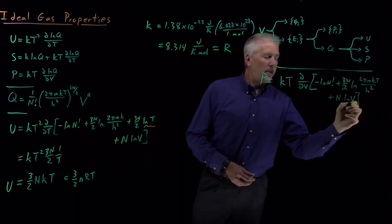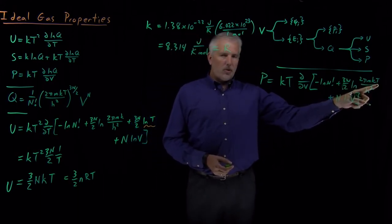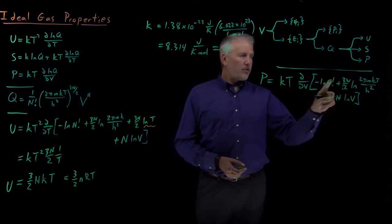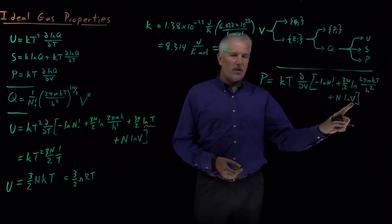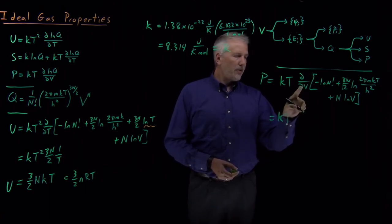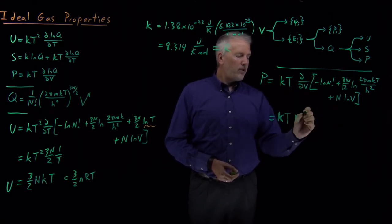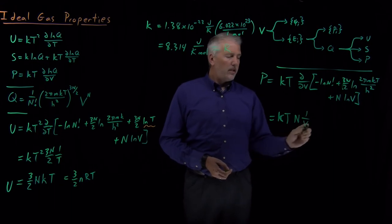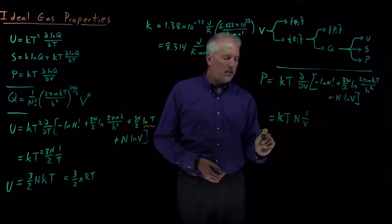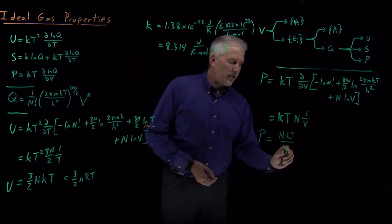That's the quantity I have to take the volume derivative of. Now I don't care about the T anymore. What I care about is the V. There's no Vs anywhere except in this log V term. So my result ends up looking like KT times volume derivative of N log V. So there's an N derivative of log V is 1 over V. And if I simplify that a little bit, it looks like pressure is equal to NKT divided by V.